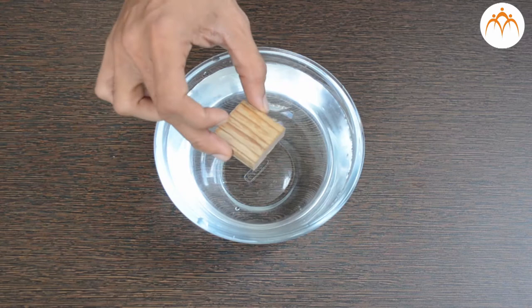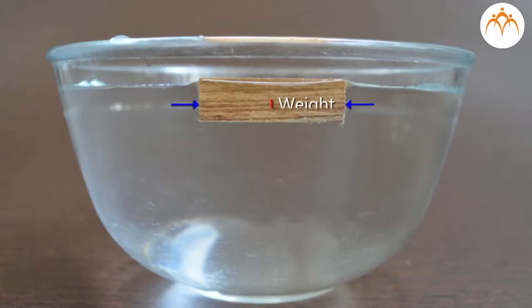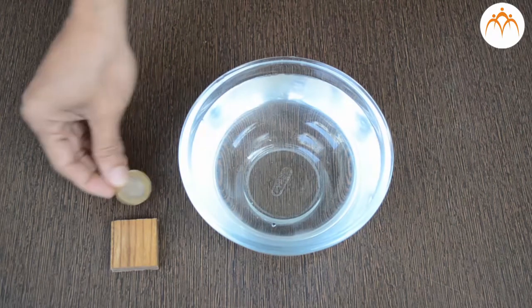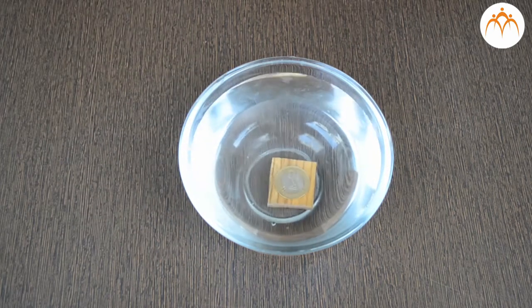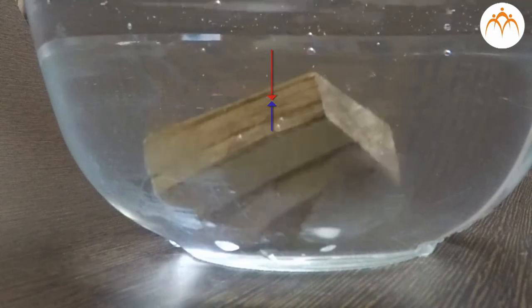If I put this wooden block inside water, it floats. It is floating because the weight of the block is balanced by upward force exerted by water. This is called buoyant force which we will talk about later. These two forces are balanced. If I put some weight on the wooden block, the forces won't be equal. The forces will be unbalanced. Wooden block with added weight will sink as a result.